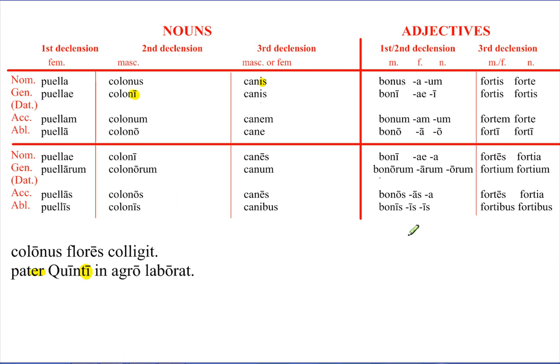And you really must know these endings, and you must know what each of the cases do, including the new genitive of the father of Quintus, Quintus' father. Okay, now for some new stuff. And the new stuff is going to be the following. We have for, not for the first column, but for the second two columns, we have a new gender, neuter.